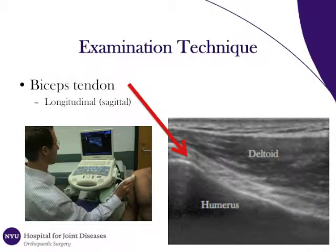The biceps tendon is also imaged in the longitudinal plane. This is performed by a 90-degree rotation of the examiner's probe, as seen in the picture on the left. This produces a longitudinal image of the biceps tendon. The biceps tendon, as demarcated by the red arrow, sits clearly between the humerus and the deltoid muscle.